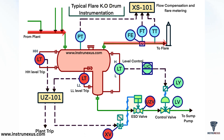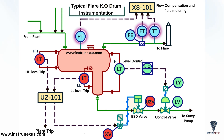On the outlet side, you can see flow instrumentation: a flow element (FE), flow transmitter (FT), and temperature transmitter (TT). These send signals to the flow compensation unit, XS101, which calculates the corrected flare gas flow rate for monitoring and reporting.